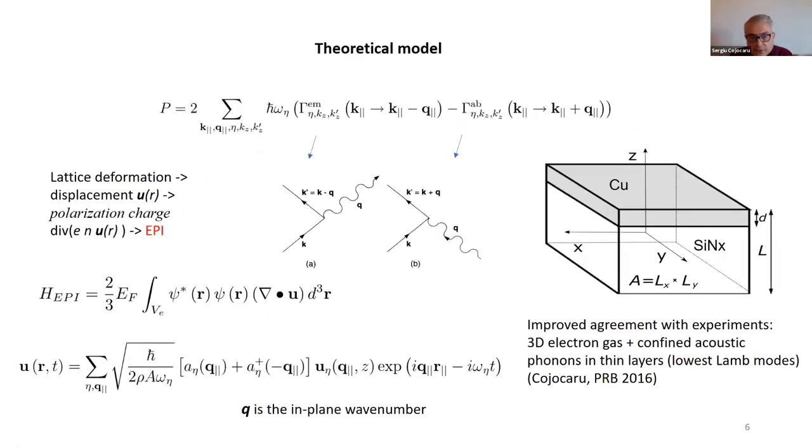That's why we tried to consider the problem within the framework of the elasticity theory describing the phonons, which is a well-established theory for the sound waves in confined media. In our model, the electrons are described by three-dimensional standard Fermi liquid theory. The simplest model consists of two layers, say copper and silicon nitride, and the acoustic waves are propagating within the plane. Here is the quantized version with the amplitudes and the propagation wave number in plane.